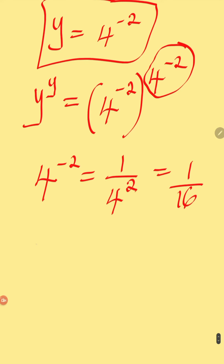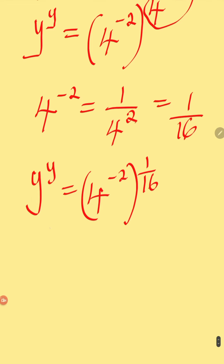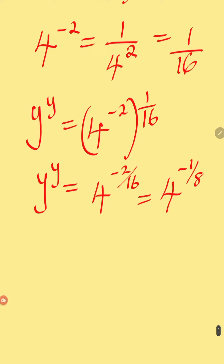Therefore, y to the power of y will now be 4 to the power of minus 2, then raised to the power of 1 over 16. So this will now be y to the power of minus 2 over 16, which is equal to 4 to the power of minus 1 over 8.